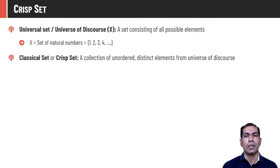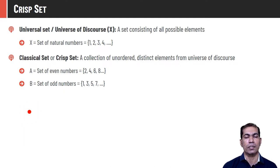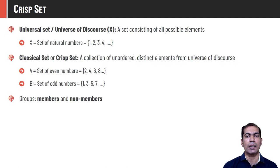Let's derive some sets from the universe of discourse. We may define A as the set of all even numbers and B as the set of all odd numbers, so A = {2, 4, 6, 8, ...} and B = {1, 3, 5, 7, ...}. Each member is called an element of the set. Any element from the universe of discourse will either be a member of the set or not. For example, element 3 is not a member of A but is a member of B.